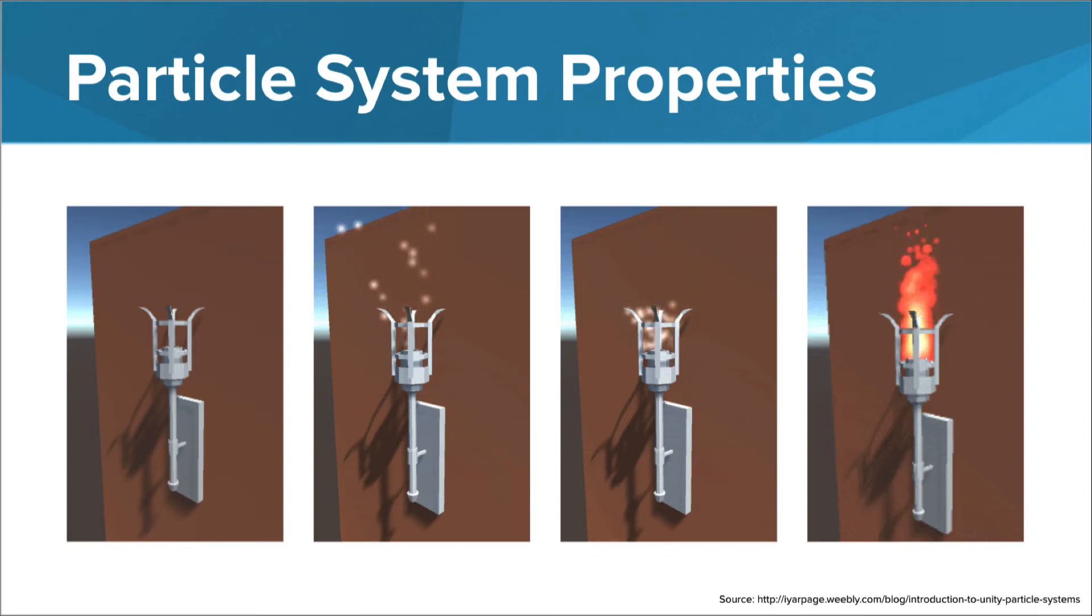These particle system properties determine how the particles will behave in the game environment. Will they fall to gravitational force? How often should a new particle emit from the source shape? In what direction should the particle move? At what speed will the particles travel and for how long? Lastly, what colors, textures, or materials will be added to create a rich visual effect? These are all questions you'll need to answer while configuring each particle system.